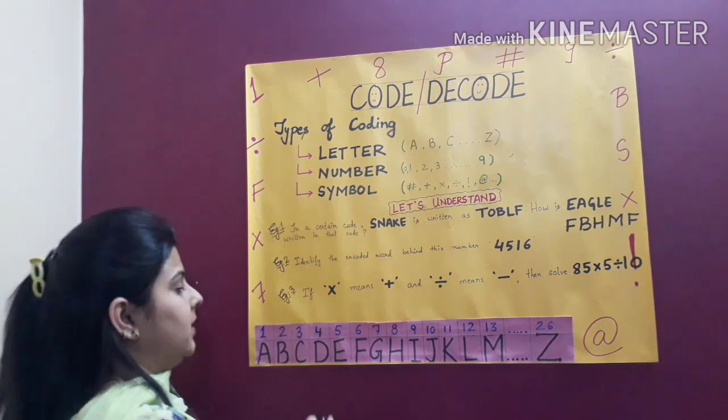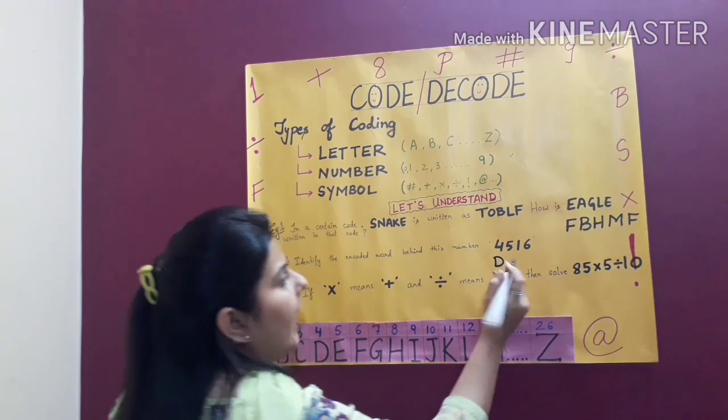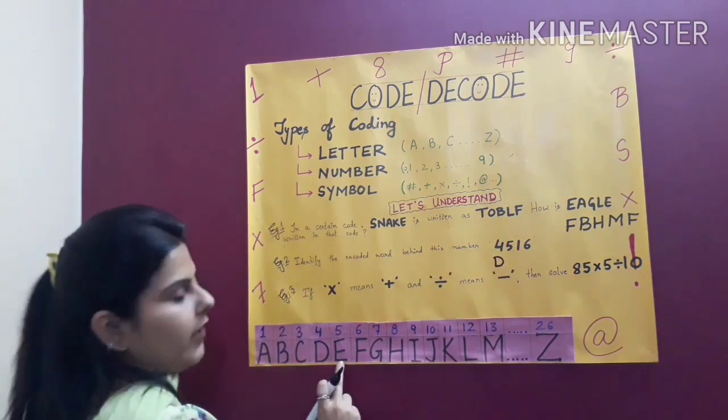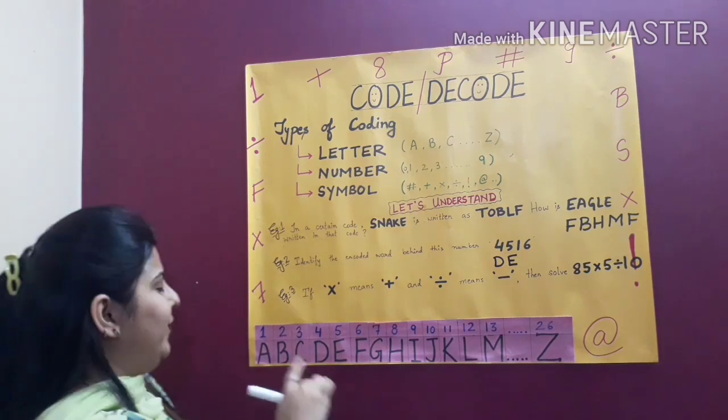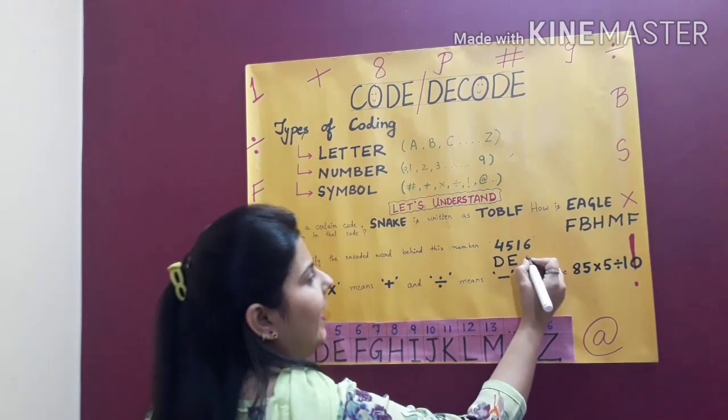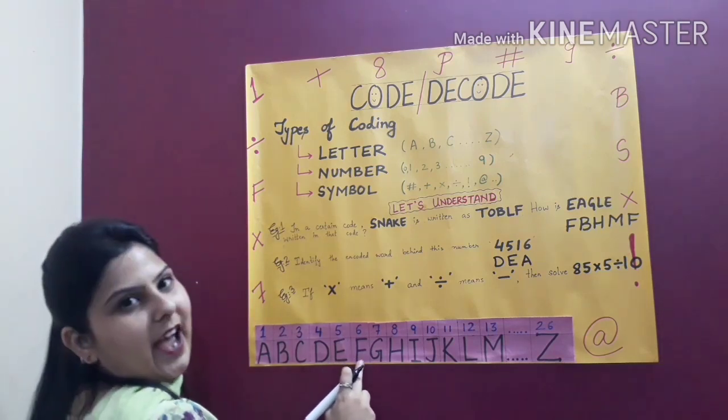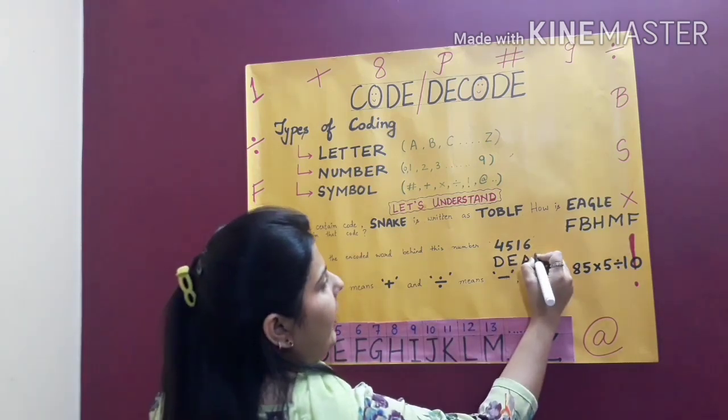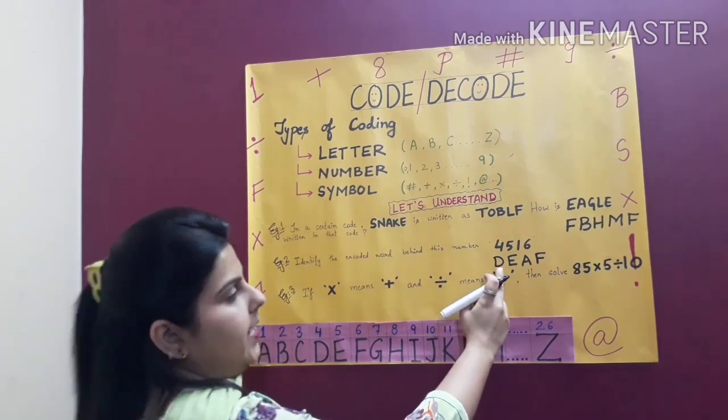Now let us try to relate these numbers to the letters. At number 4 we have the letter D. At number 5 we have the letter E. Very good. At number 1 we have the letter A. Excellent. At number 6 we have the letter F. So the decoded answer is DEAF.